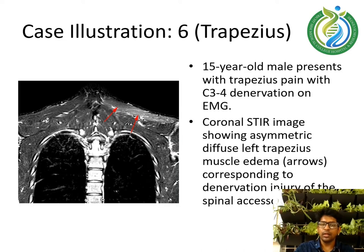Case illustration 6: a 15-year-old male presenting with trapezius pain with C3-C4 denervation on EMG. Coronal STIR image shows asymmetric diffuse left trapezius muscle edema corresponding to denervation injury of the spinal accessory nerve.